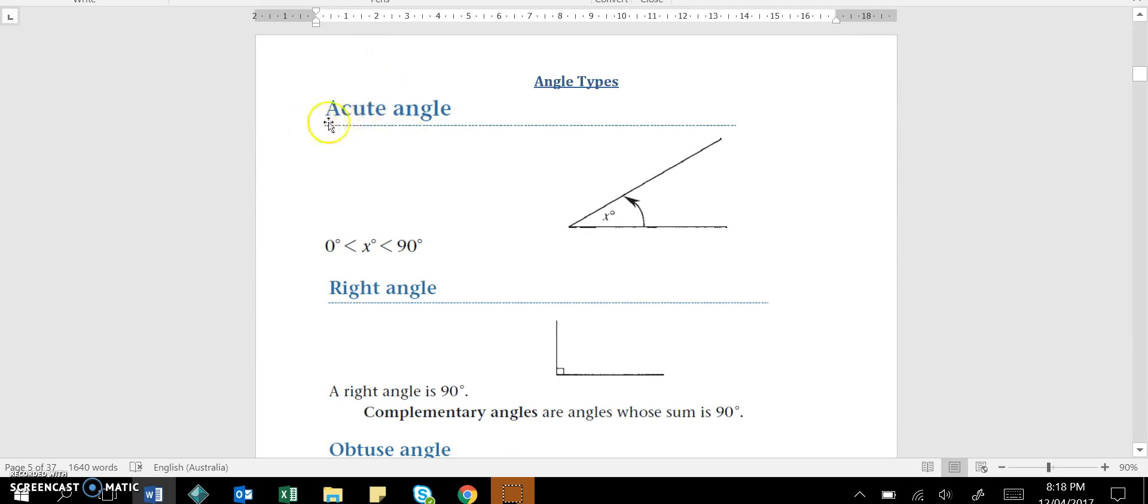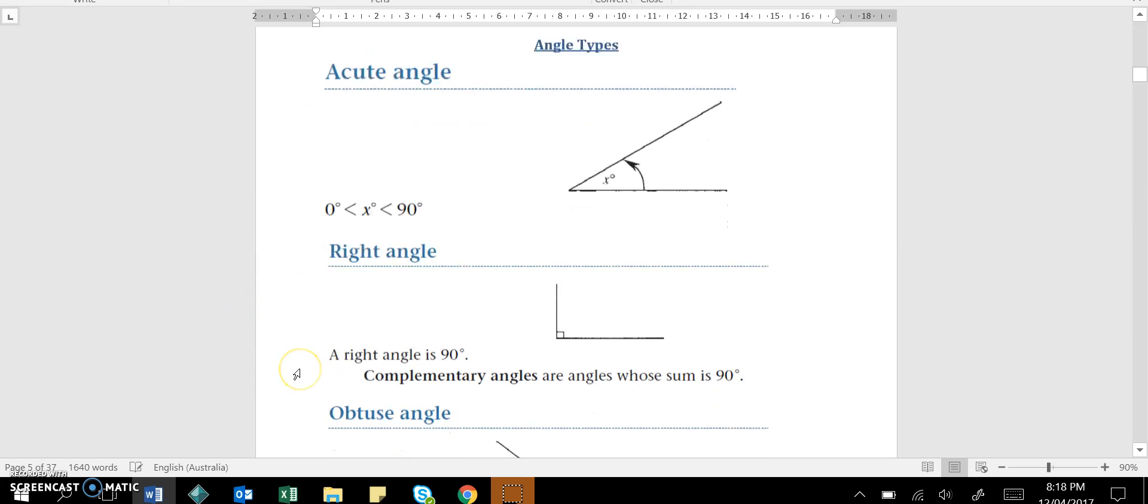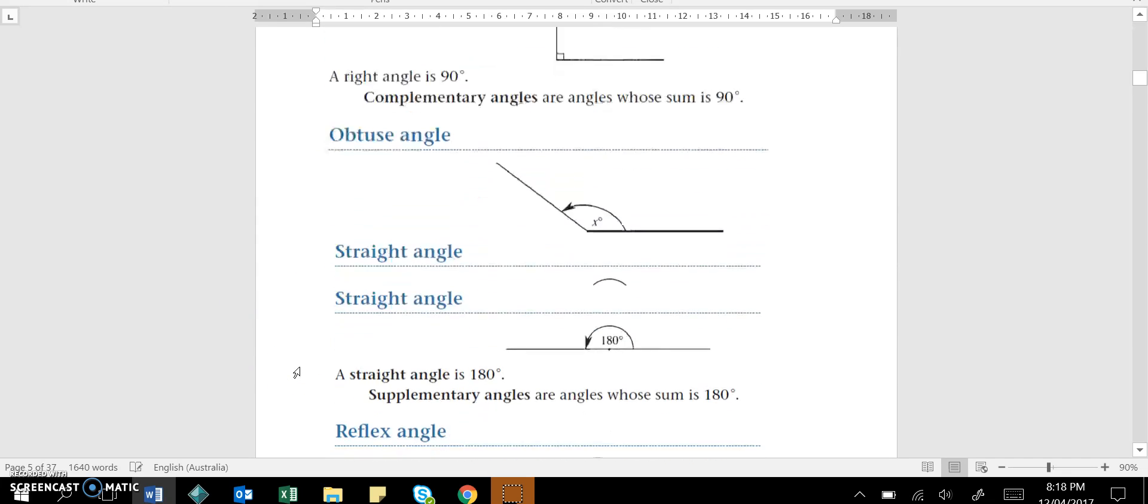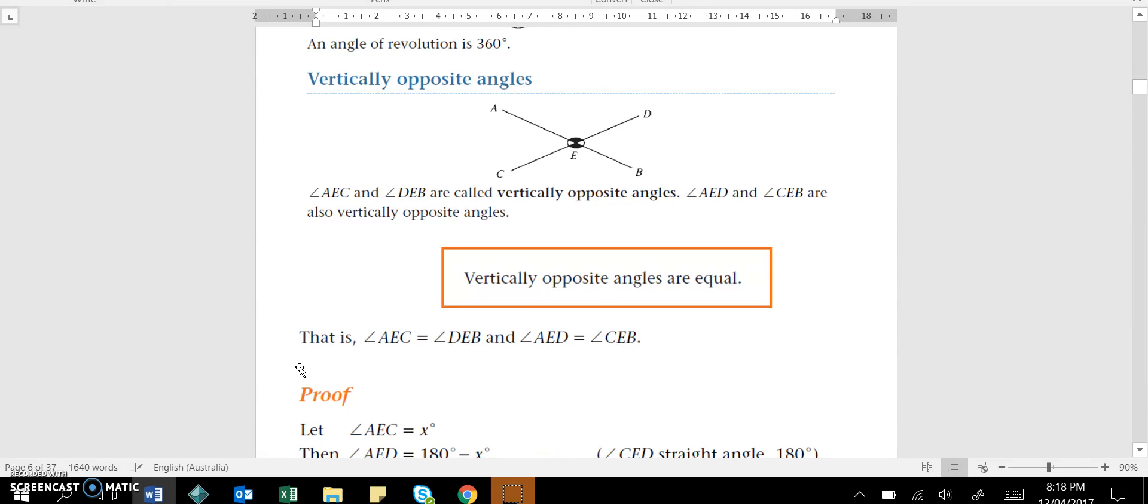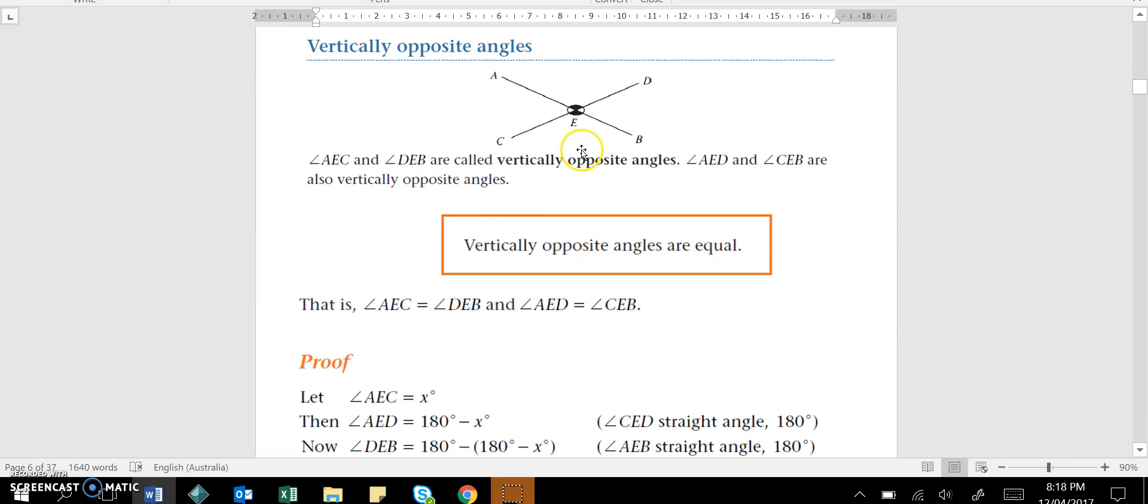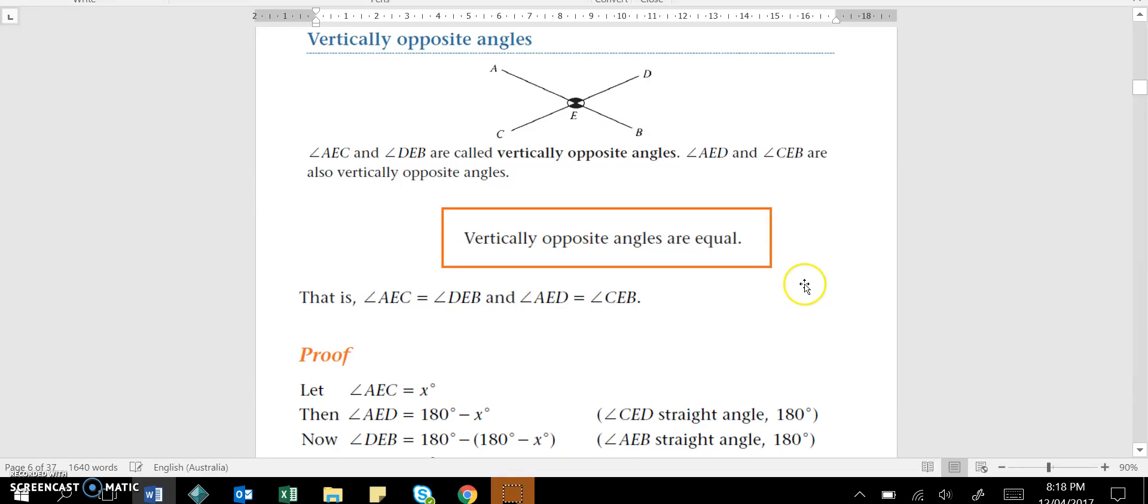Your different types of angles, you need to revise those. So I'm not going to go through them now just for time's sake, but you can read through those. You should know all of them anyway. I will quickly go through this proof with you. So vertically opposite angles, we know that they can be two vertical angles that are equal to each other, opposite. And they can actually be horizontal as well, but we just still call them vertically opposite angles. We know they're equal.